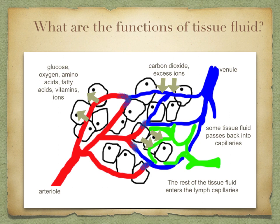Most of the tissue fluid then passes back into the blood capillaries, so fluid is constantly flowing from the plasma and back into the plasma. But some of it does drain into our lymphatic system, which is represented by the green.